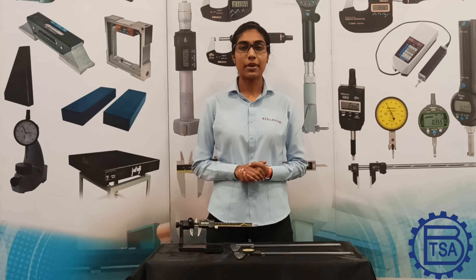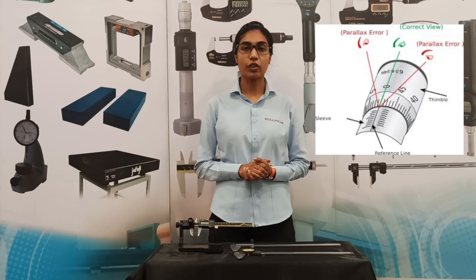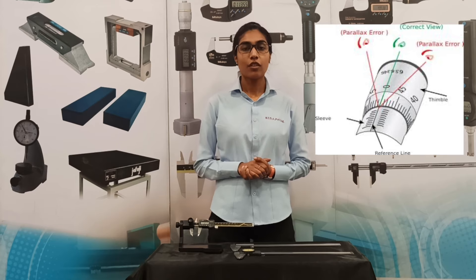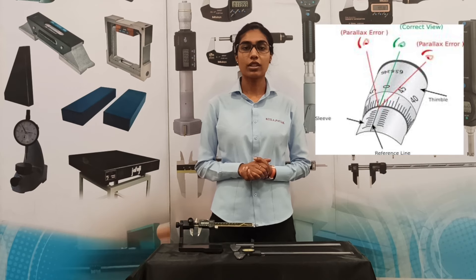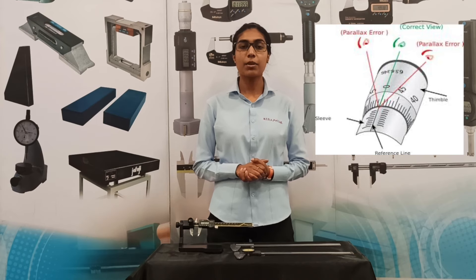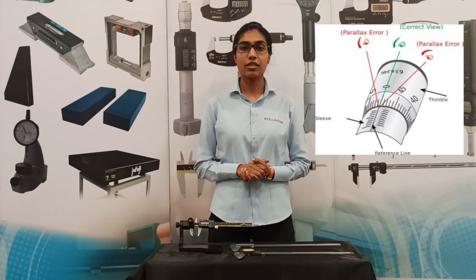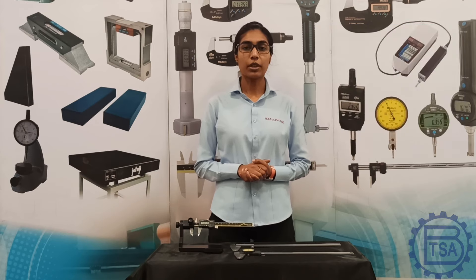We very often come across this word parallax error. What is parallax error? Parallax is the displacement or difference in the apparent position of an object viewed along two different lines of sight. For example, our human eye has two different lines of sight viewing on the same object. The process by which the brain exploits the parallax due to the different views from our eye to gain depth perception and estimate distances to objects, or simply speaking, the error or displacement caused in the apparent position of an object due to the viewing angle that is other than the angle perpendicular to the object.